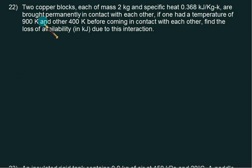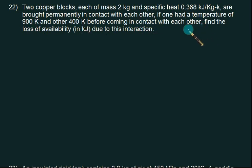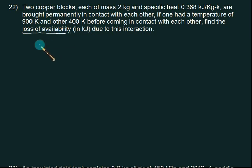We are given two copper blocks each of mass 2 kg, Cp is 0.368. Initial temperature of one block is 900 and the other is 400. You have to find out the loss in availability, that is how much amount of heat is lost to the surrounding.